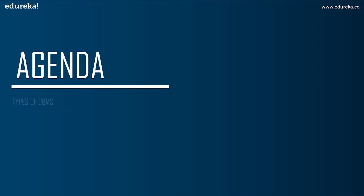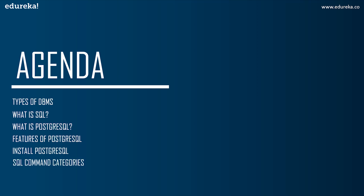We'll start today's session by understanding what is database management systems and then what is SQL. After that, I'll talk about what is PostgreSQL and its features, then show you how to install PostgreSQL on Windows. Once done, I'll talk about the different command categories in SQL — DDL, DML, DCL, and TCL — so you can understand how to implement various commands to manipulate databases. I'll also cover concepts like entity relationship diagrams, operators, aggregate functions, joins, normalization, views, triggers, and procedures.